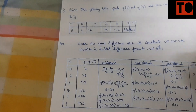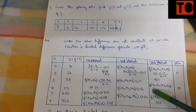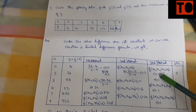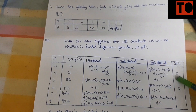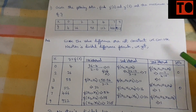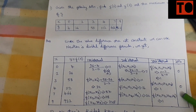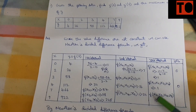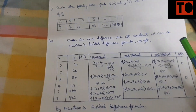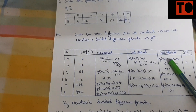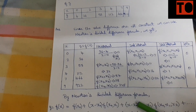The fourth interval values come out as 0 minus 0, so the numerator is 0 and the denominator is also 0, giving 0. The denominator expression is 3 minus 3, resulting in 0 by Newton's divided difference formula.